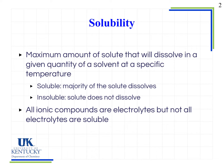If we have the maximum amount of solute that will dissolve in a given quantity of solvent at a specific temperature, that is known as a substance's solubility. It doesn't mean that's the only amount that can dissolve — it just means that's the maximum amount. When we dissolve that maximum amount of substance, we call that solution saturated.